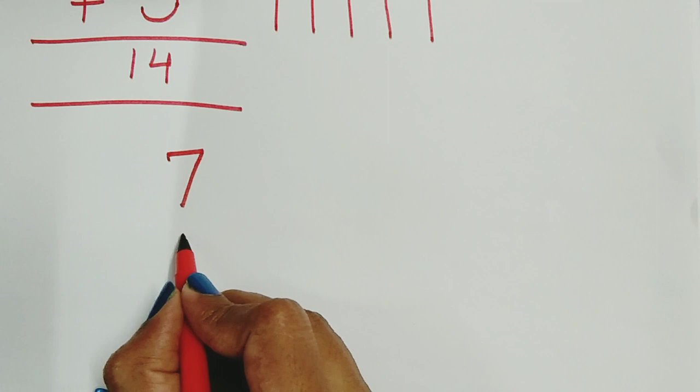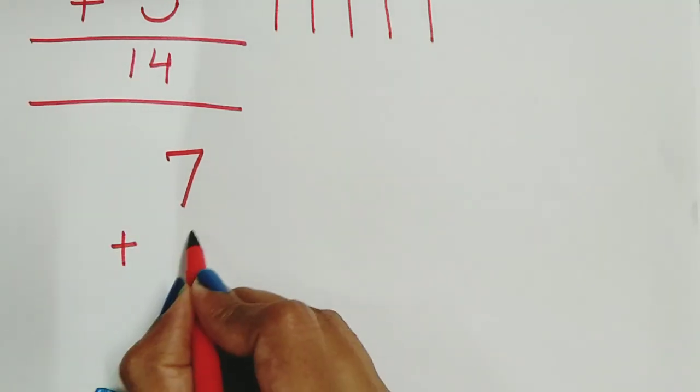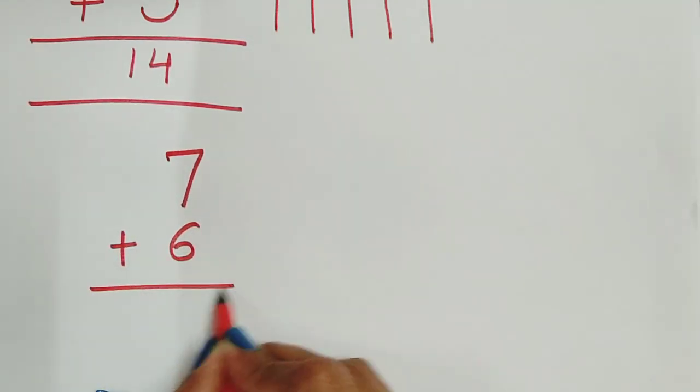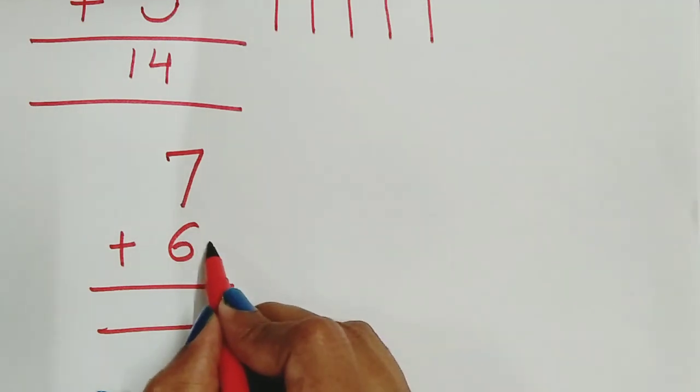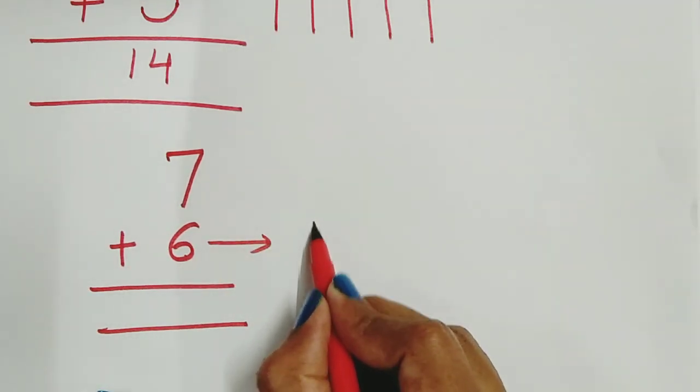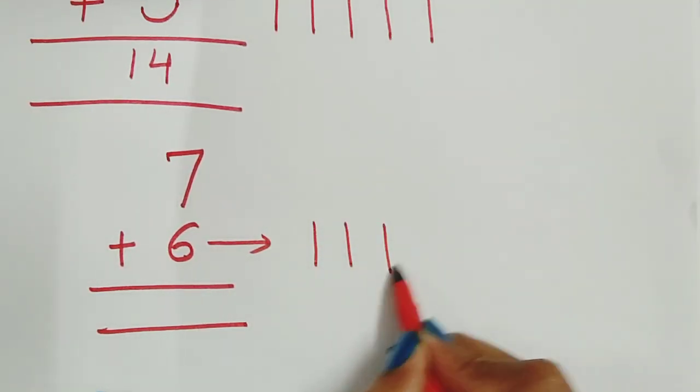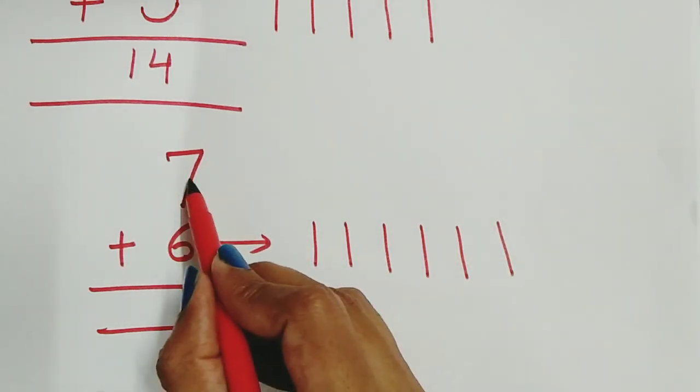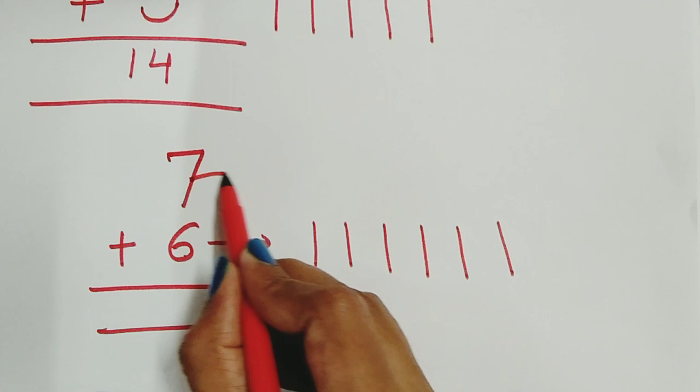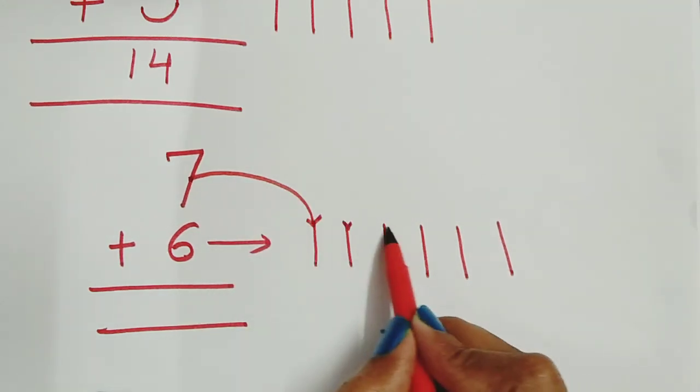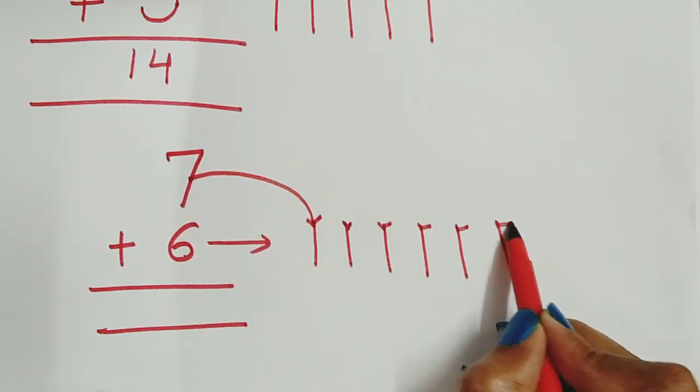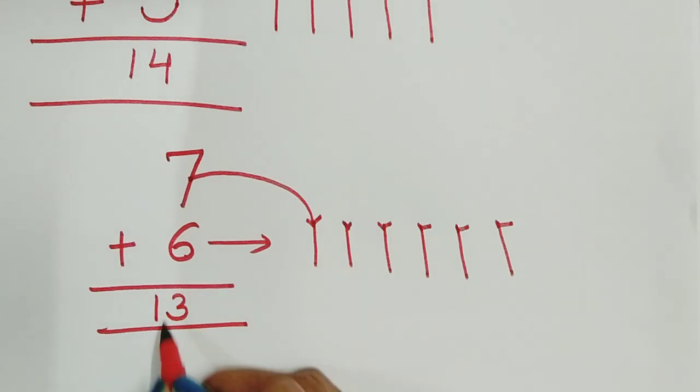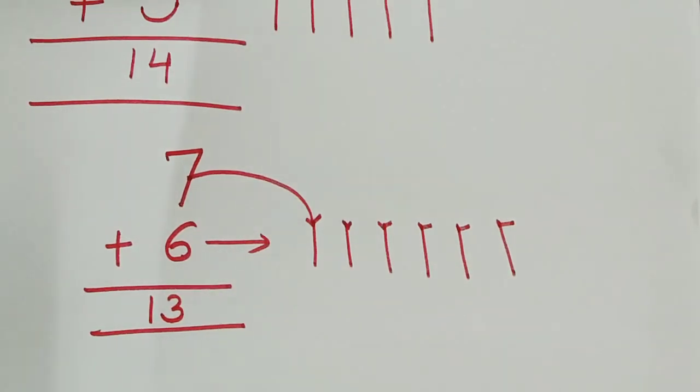Let's see one more question: 7 plus 6. Again draw 6 lines for the downward number: 1, 2, 3, 4, 5, 6. Do counting after 7. That is 8, 9, 10, 11, 12, 13. And our answer is 13.